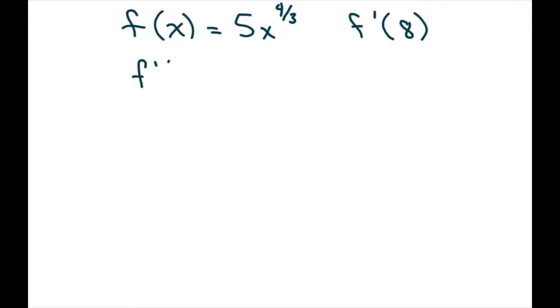So we have f prime of x equals 4/3 times 5x to the power of 4/3 minus 1, which is 1/3.